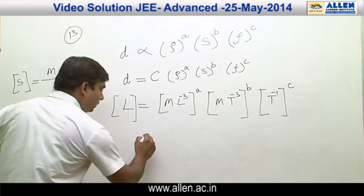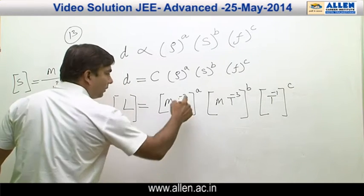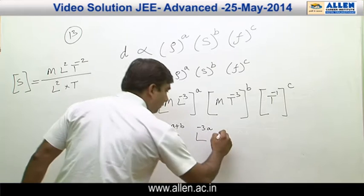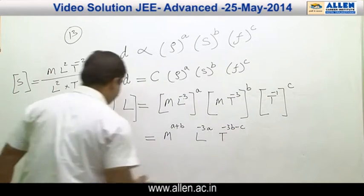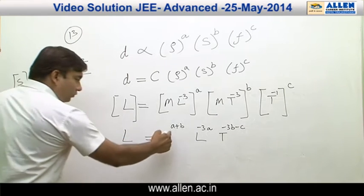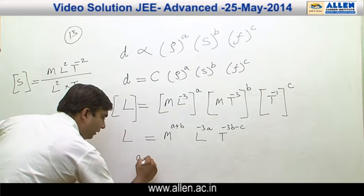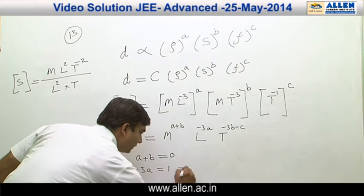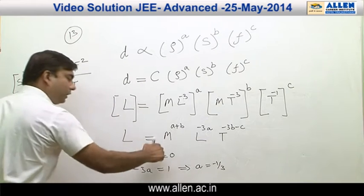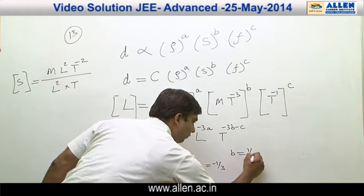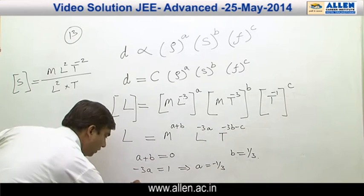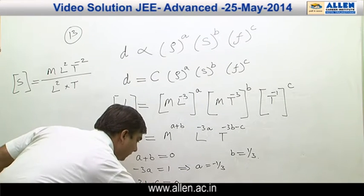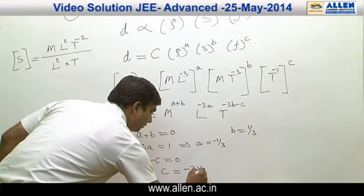This becomes the dimensional equation. Now equating powers on both the sides: M has power a+b on the right hand side. L has power −3a. T has power −3b−c. This equals L on the left, meaning L¹ M⁰ T⁰. So equating: a+b = 0, −3a = 1 giving a = −1/3. Substituting, b = 1/3. Then equating power of T: −3b − c = 0, giving c = −3×(1/3) = −1.